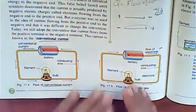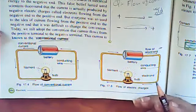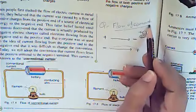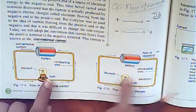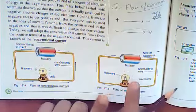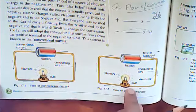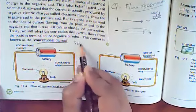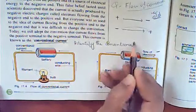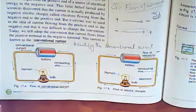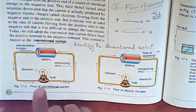Now the question is how we are going to ask this diagram in your paper. We will give you both circuits — both diagrams as options. For example, the question will be 'identify the conventional current.' To identify it, look where the arrows are moving from positive to negative end — that is conventional current. Both figures will be given and you have to pick the correct figure.